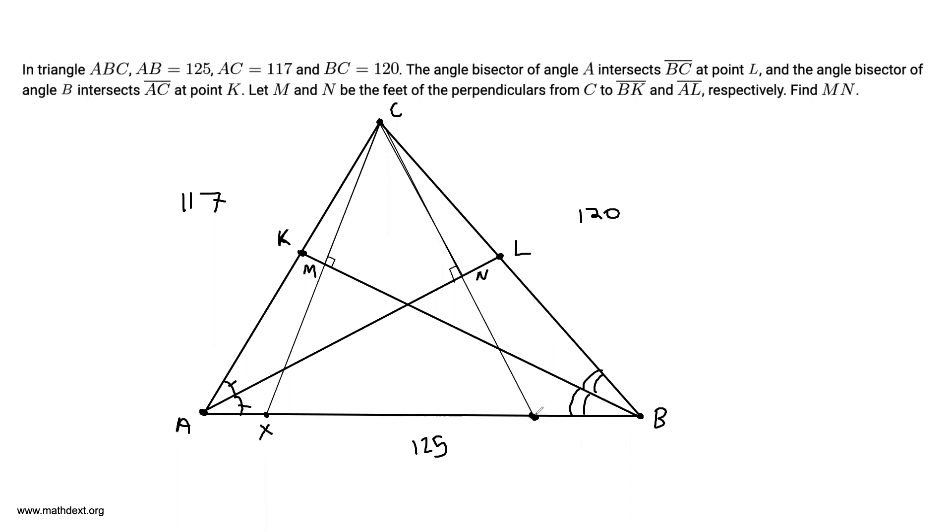It might not seem immediately obvious why we do this, but I'm going to claim that triangle BCX is isosceles. So we're going to be keeping an eye out on this triangle over here, triangle BCX. We're going to claim that this triangle is isosceles.